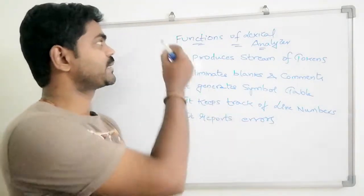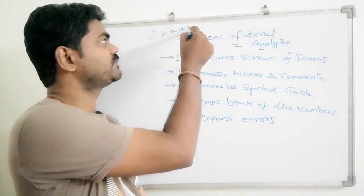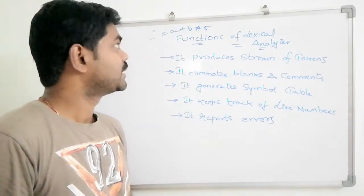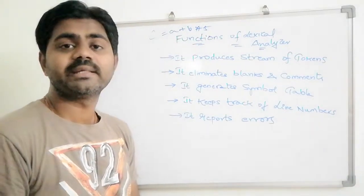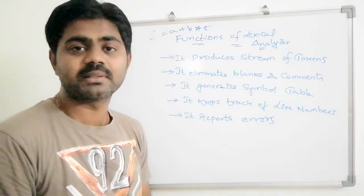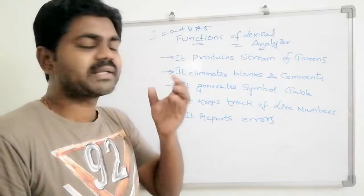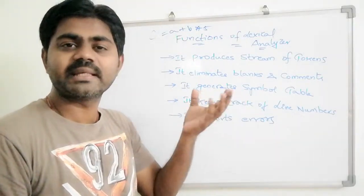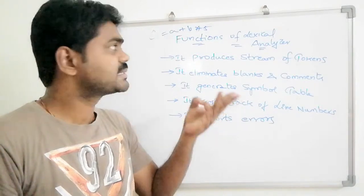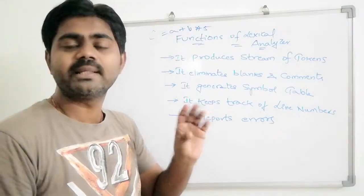Previously we discussed an example: c = a + b * 5. C is an identifier, equal to is an assignment symbol, a is an identifier, plus is a plus sign, b is an identifier, star is a multiplication sign, and five is a number.